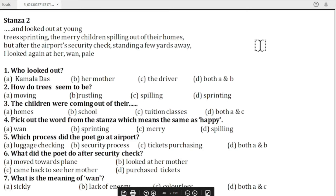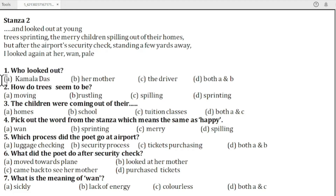Now, let's pause the video and read stanza number two. From stanza two, question one is: who looked out? The answer is A — Kamala Das. The poet looked out of the car window. Question two: how do the trees seem to be? The answer is D — sprinting. Question three: the children were coming out of the — the answer is A — homes.